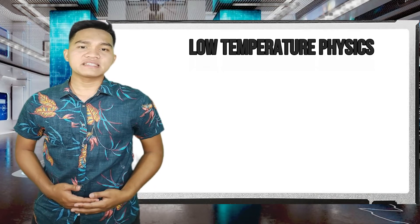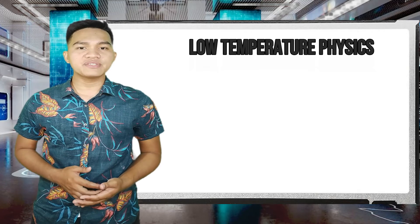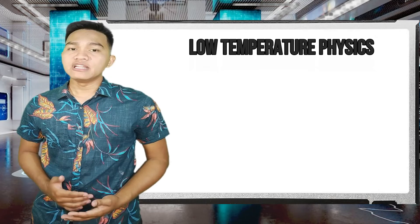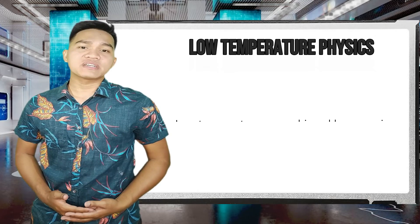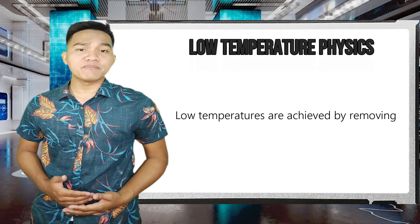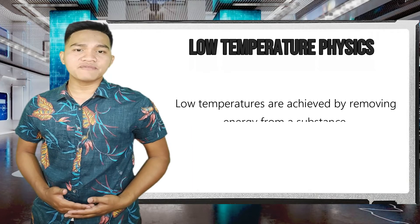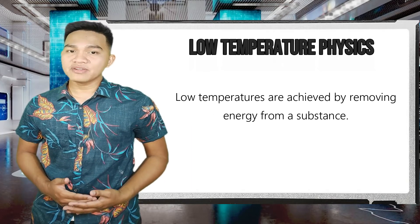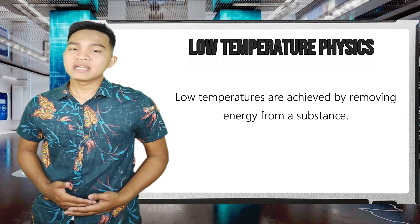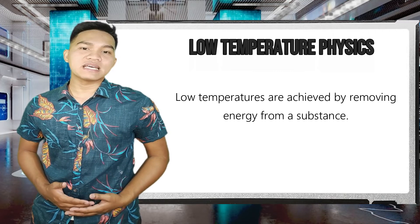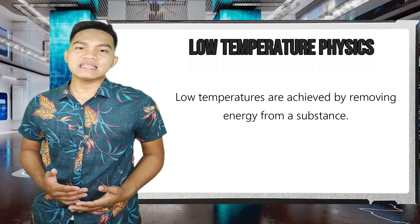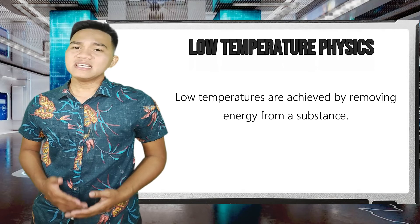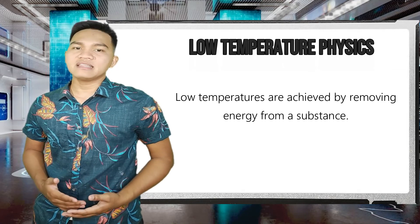Low-temperature physics is known as cryogenics, meaning producing cold. Low temperatures are achieved by removing energy from a substance, which may be done in various ways. The simplest way to cool a substance is to bring it into contact with another substance that is already at a low temperature.